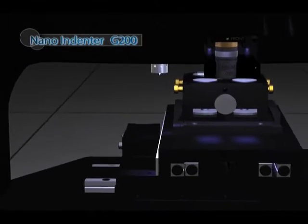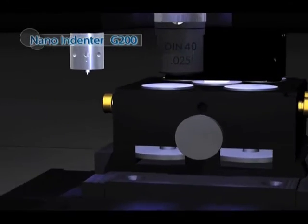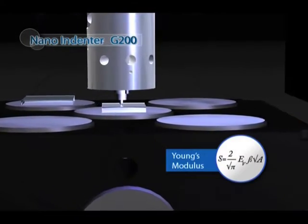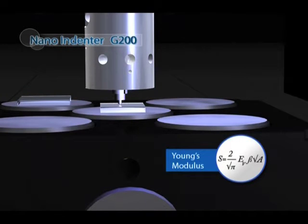During operation of the nano indenter, the samples are loaded into the sample tray and aligned to a common focal plane. Test locations on the samples are chosen under the microscope assembly. When the tests are initiated, the samples are automatically translated under the indenter where the probe engages the first sample.